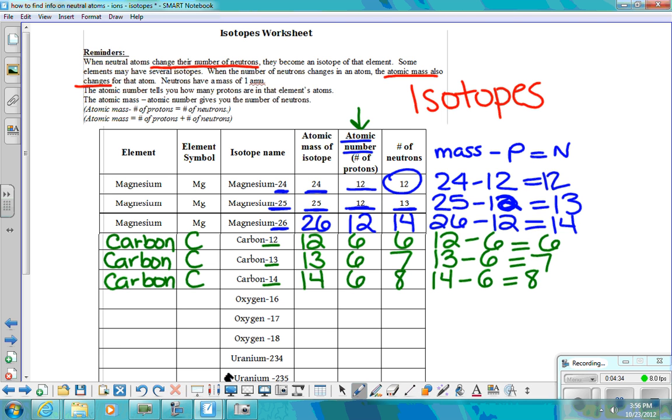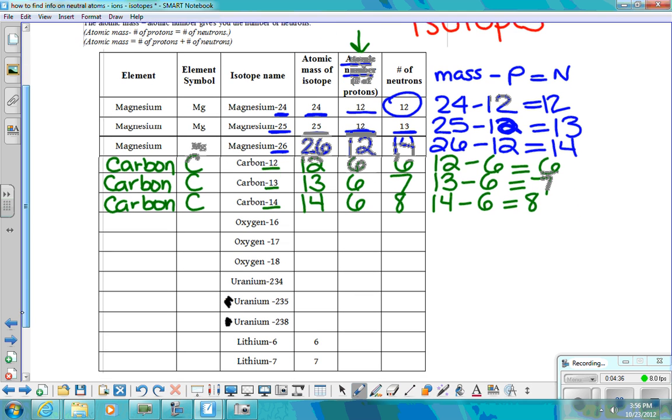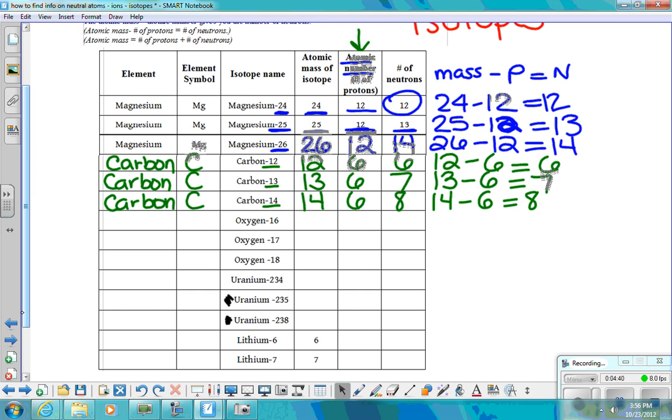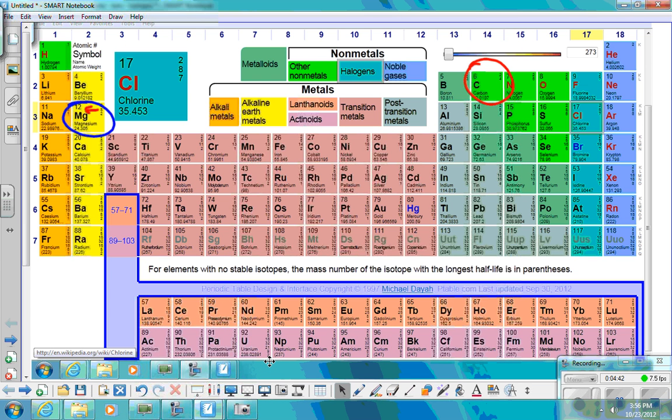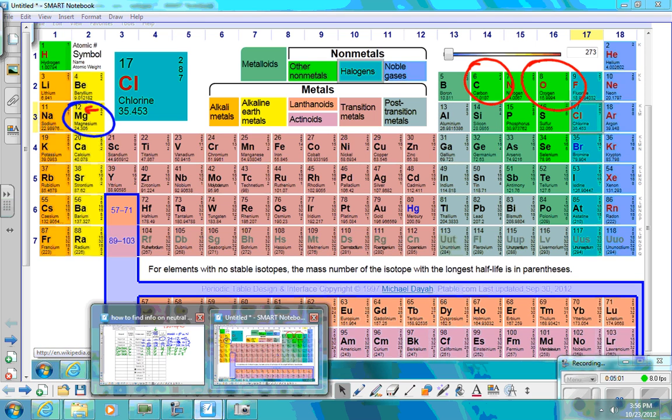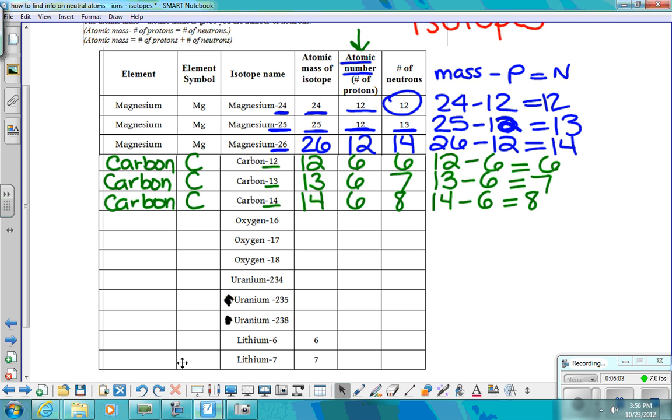Let's do one more together. Let's do oxygen. Let's first find oxygen on our periodic table. Here is oxygen. Oxygen's mass on the periodic table is 15.994, which would be rounded up to 16. The symbol is O, and the atomic number is 8. Since the atomic number is 8, that means we have 8 protons in each of these atoms, each of those isotopes. So let's go ahead and fill in our element name.